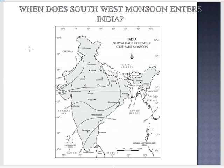The southwest monsoon sets in over the Kerala coast by 1st June and moves swiftly to reach Mumbai and Kolkata by 10th and 13th June respectively. By mid-July, the southwest monsoon engulfs the entire subcontinent.